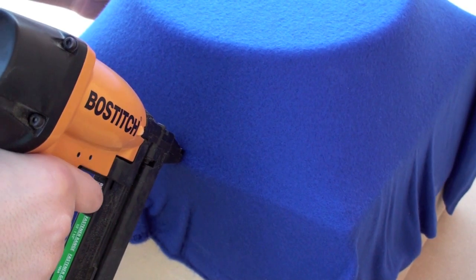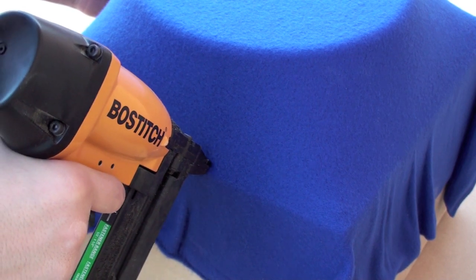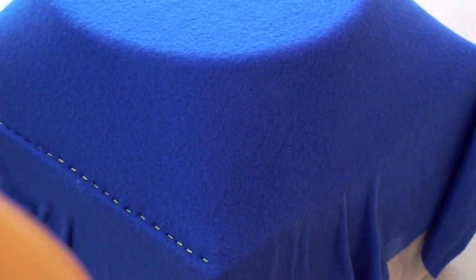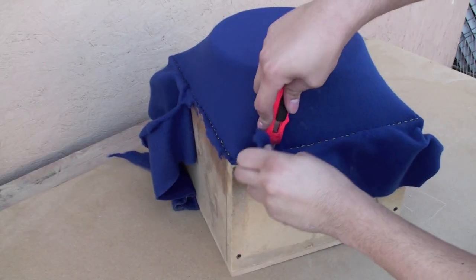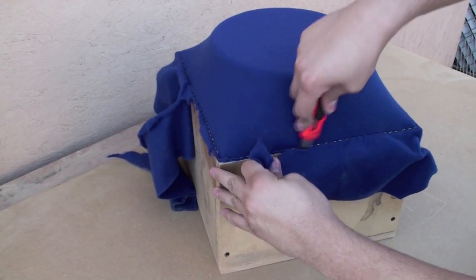Now staple the fleece to the rabbited edge. Repeat this step for all three sides. Now take a razor and cut away the excess fleece.